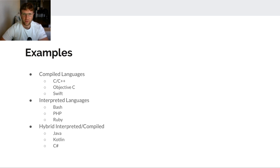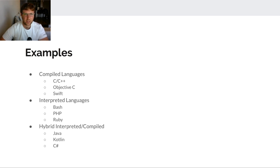That's the difference between assemblers, interpreters, and compilers. A lot of times we're just going to use the word 'compile' — this code gets compiled down to whatever — and that's really basically what it means. Alright, see you in the next video.